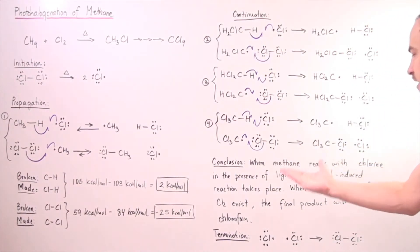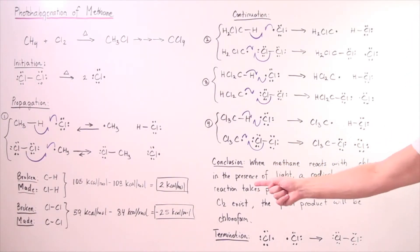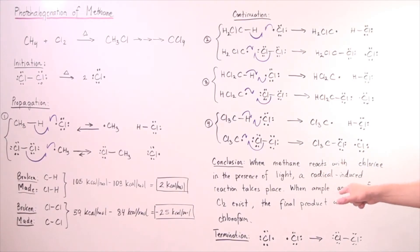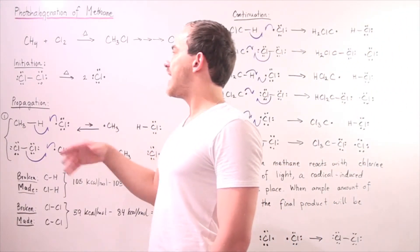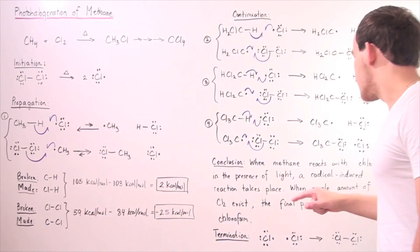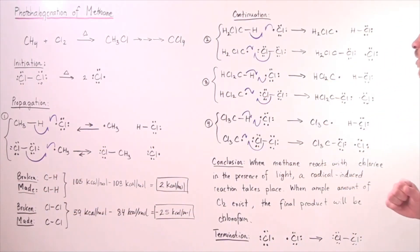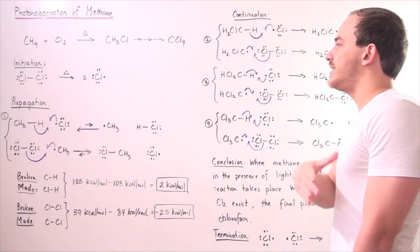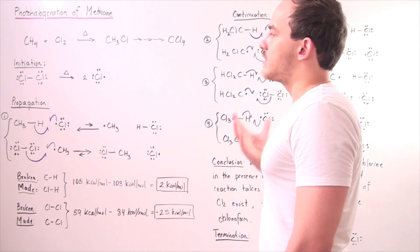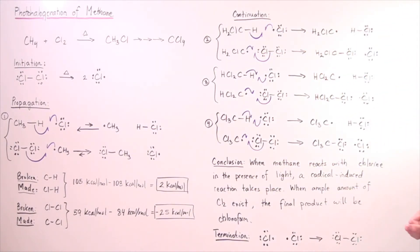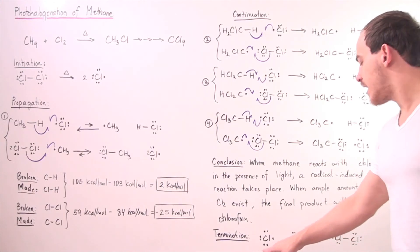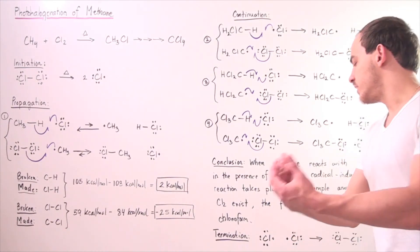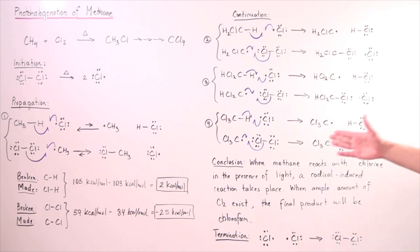In conclusion, when methane reacts with chlorine in the presence of light, a radical-induced reaction takes place. When an ample amount of chlorine exists and we allow some time to react, the final product will be carbon tetrachloride. For this reaction to end, a termination step must occur. One example: two chloride radicals react exothermically, releasing energy and forming a Cl-Cl bond, ending the radical chain process.